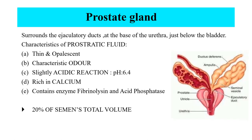The prostate gland is the largest accessory gland of the male reproductive system. This fibromusculoglandular structure surrounds the ejaculatory ducts at the base of the urethra, just below the bladder. Characteristics of prostatic fluid: thin and opalescent with a characteristic odor, slightly acidic in reaction, rich in calcium, and contains enzymes fibrinolysin and acid phosphatase. Prostatic gland secretions constitute 20% of semen's total volume.